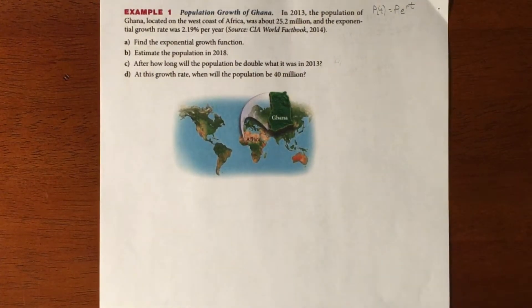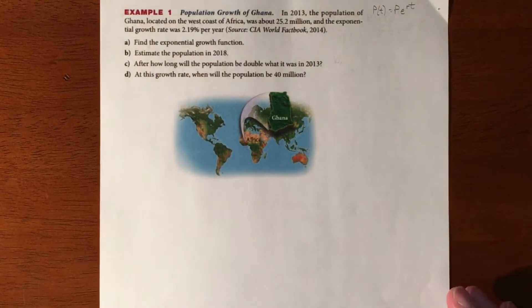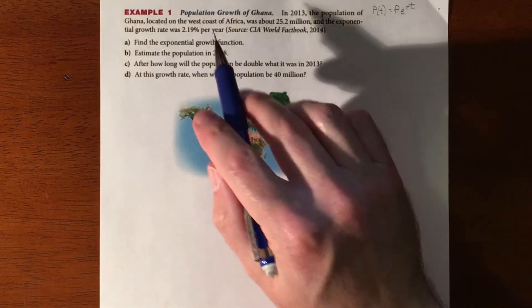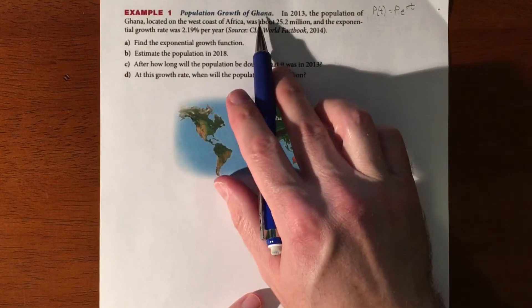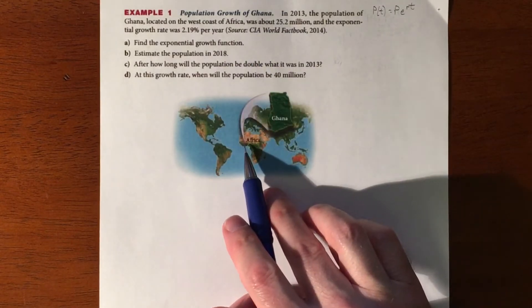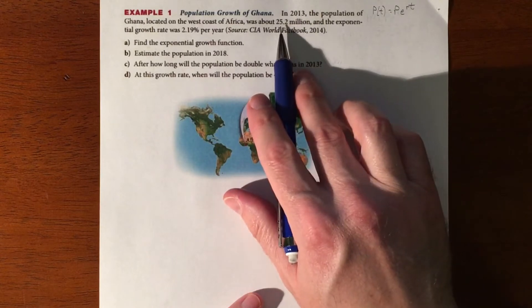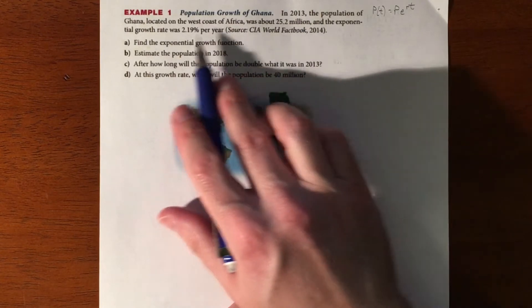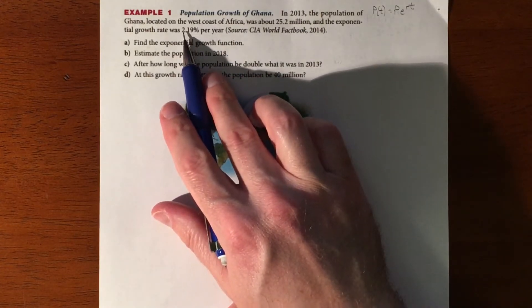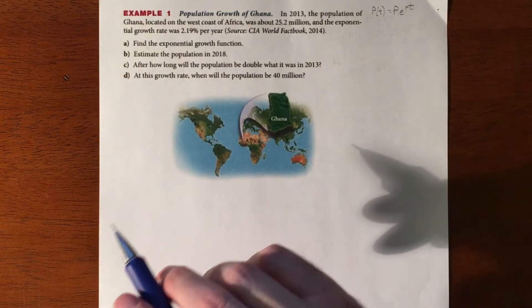In this lesson we're going to be solving word problems associated with exponential growth or exponential decay. This one involves the population growth of Ghana, which is a country on the west coast of Africa. In 2013 it had an initial population of 25.2 million and was growing exponentially at 2.19% per year.